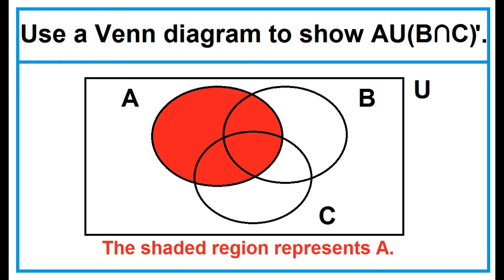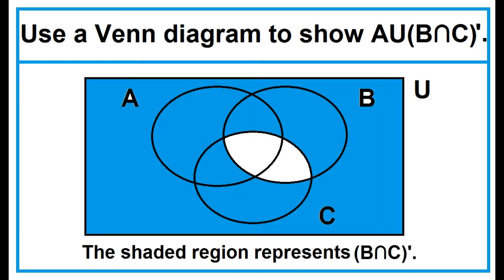The shaded region represents A. The shaded region represents the complement of B intersection C.